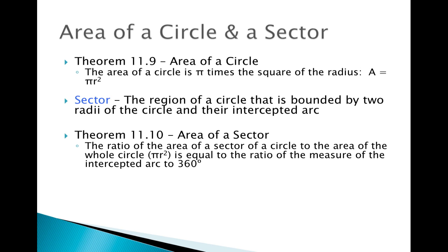And this is theorem 11.10. So this theorem states that the ratio of the area of a sector of a circle to the area of the entire circle, which is pi r squared, is equal to the ratio of the measure of the intercepted arc to 360 degrees. So that's what this equation looks like when we set up our proportion.